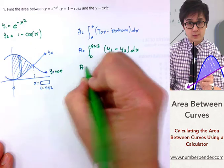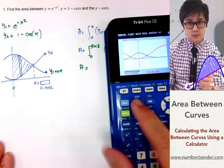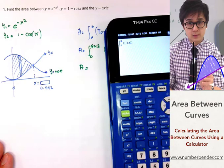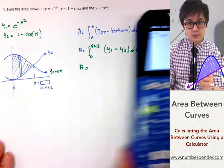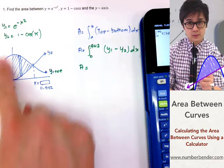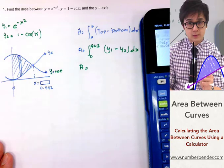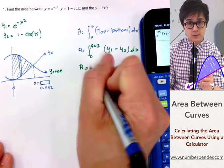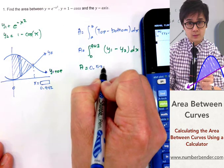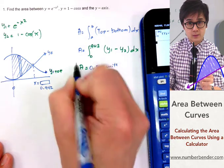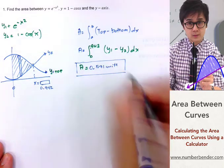So using our calculator: second, quit, math 9, from 0 to 0.942, we'll subtract y1 (top function is y sub 1) minus bottom function, which is y sub 2. And it's giving us 0.5909, or we can round it up to 0.591. So this is the area between the curve using the calculator.